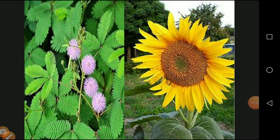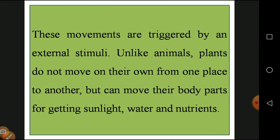We will see the diagrammatic representation of Mimosa pudica and the sunflower Helianthus annus. These movements are triggered by external stimuli. The closing of Mimosa pudica and the directional movement of the sunflower are both done by external factors — factors that come from outside the plant body, not induced by the plant itself. Unlike animals, plants cannot move from one place to another, but can move their body parts.